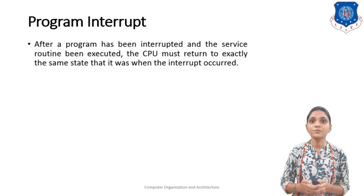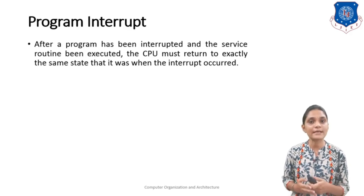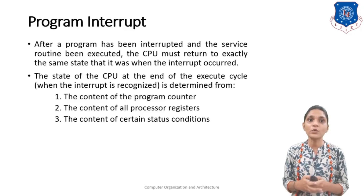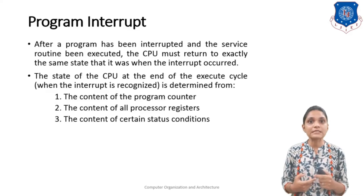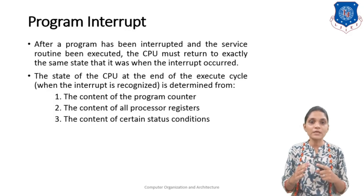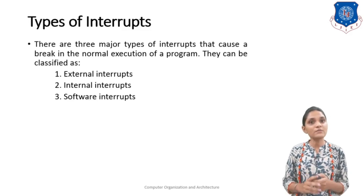After a program has been interrupted and the service routine has been executed, the CPU must return to exactly the same state it was in when the interrupt occurred. The state of the CPU at the end of the execution cycle is determined from: first, the content of the program counter; second, the content of the processor registers; and third, the content of certain status conditions. These three things must be stored before handling the interrupt.